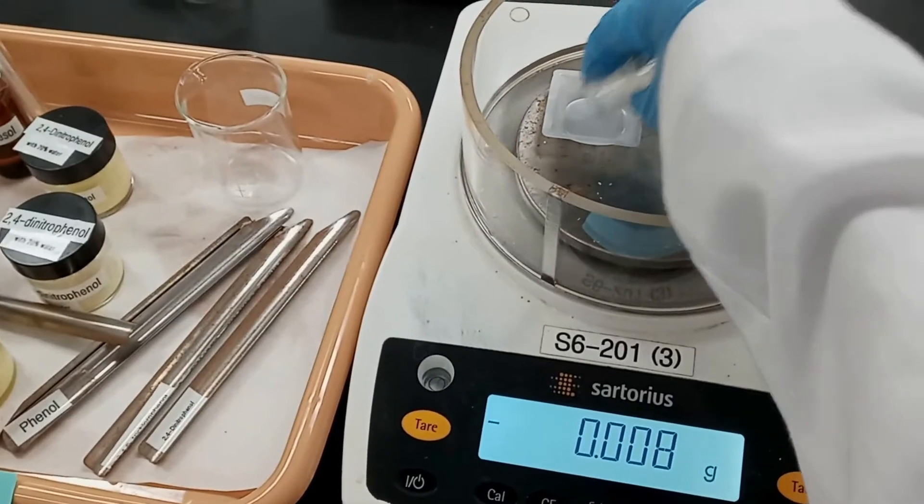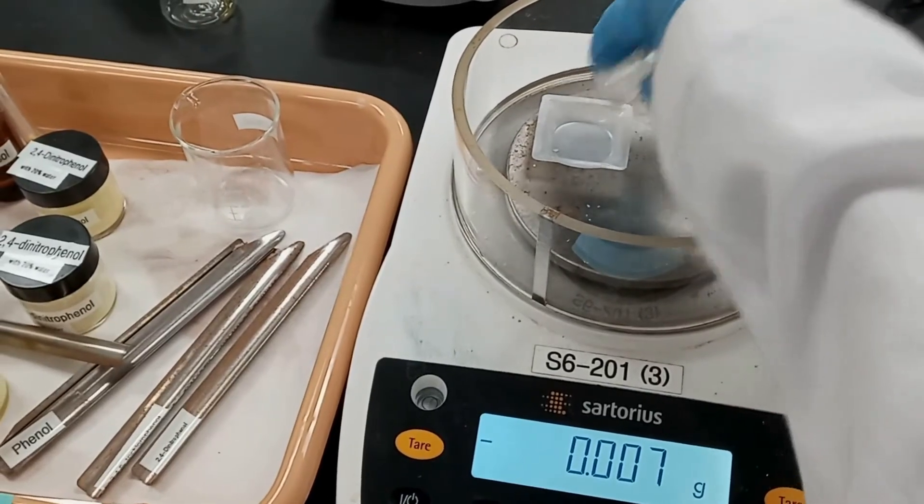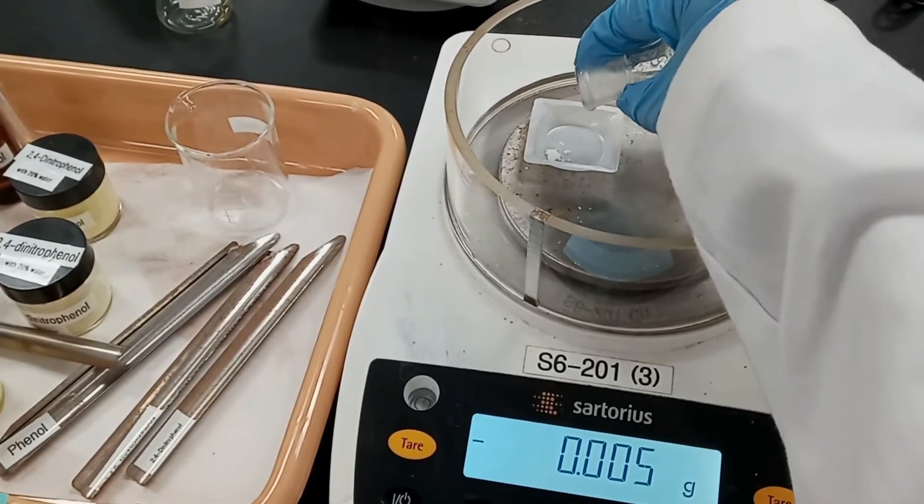We then painfully struggled to get as much of it out of the round-bottom flask as we would need it for the next part. We were only able to scrape out 0.32 grams.